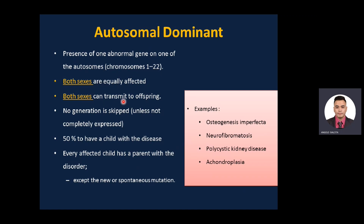Autosomal dominant features: one abnormal gene on one of the autosomes (chromosomes 1–22); both sexes are equally affected; both sexes can transmit to offspring; no generation is skipped unless not completely expressed; 50% chance to have a child with the disease. Every affected child has a parent with the disorder except in cases of new or spontaneous mutation. Examples: osteogenesis imperfecta, neurofibromatosis, polycystic kidney disease, and achondroplasia.